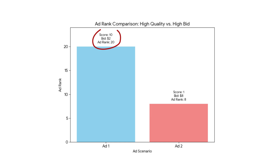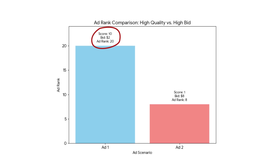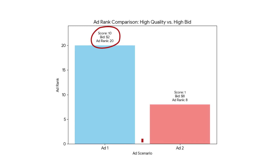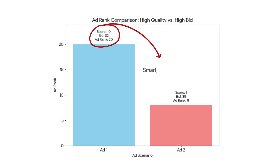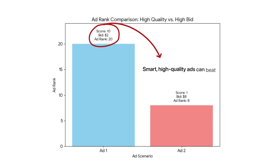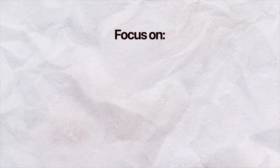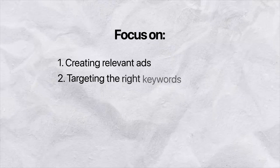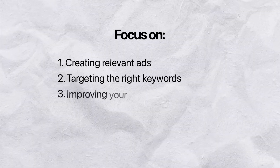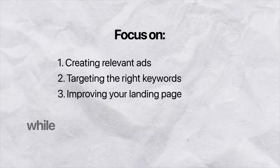For example, an ad with a quality score of 10 and a $2 bid has an AdRank of 20 — higher than someone bidding $8 with a score of 1. That means smart, high-quality ads can beat big budgets. Focus on creating relevant ads, targeting the right keywords, and improving your landing page, and you'll save money while climbing to the top of Google's results.